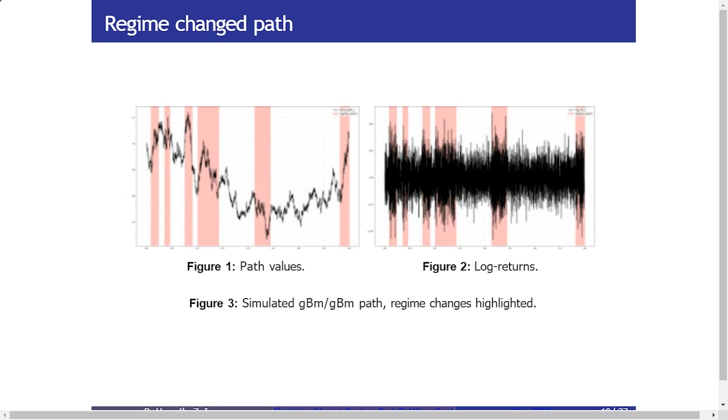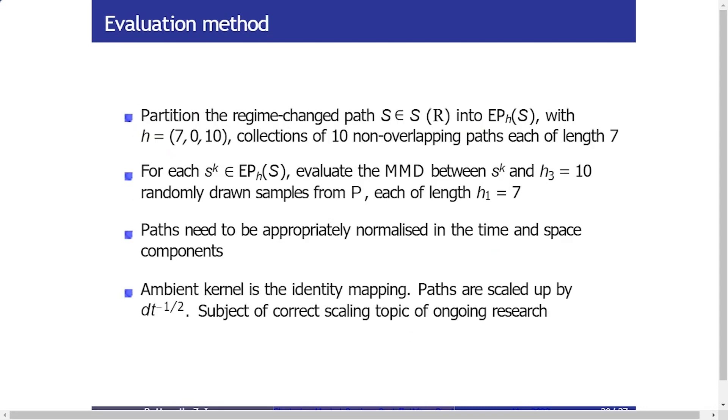So an example of this visually is this image here. So you can see this is the regime changed path. The red intervals indicate when the regime changed to this high volatility regime. And to sort of make it very clear, you can see from this log returns plot specifically when the regime changed. So again, just as a bit of a toy example, what we do here is we partition this path into collections of seven non-overlapping paths of length 10. And then we have to apply some appropriate normalizations, which I won't have time to discuss but they are quite relevant.